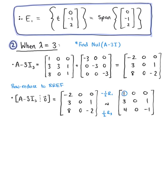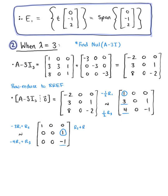Using the first pivot, we eliminate below it by doing minus 3 times row 1 plus row 2, and negative 4 times row 1 plus row 3, giving us 1, 0, 0 / 0, 0, 1 / 0, 0, negative 1. Then we use the second pivot to eliminate below it by adding row 2 to row 3, giving us the RREF: 1, 0, 0 / 0, 0, 1 / 0, 0, 0.